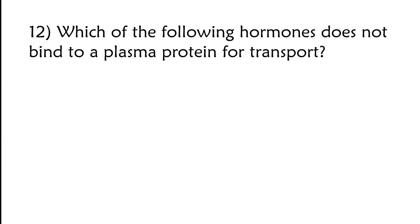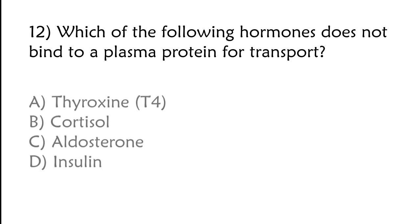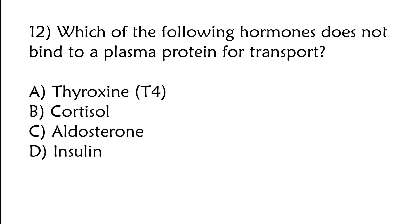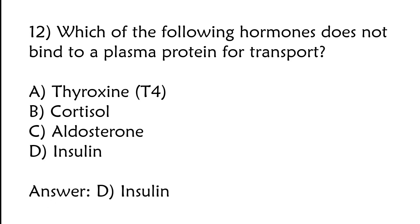Which of the following hormones does not bind to a plasma protein for transport? A) Thyroxine T4, B) Cortisol, C) Aldosterone, D) Insulin. The correct answer is option D: Insulin.